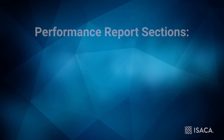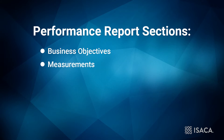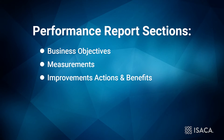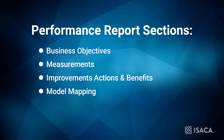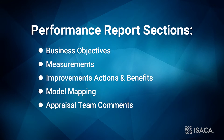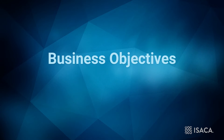The Performance Report has five sections: Business Objectives, Measurements, Improvement Actions and Benefits, Model Mapping, and Appraisal Team Comments. Let's talk about each section in more detail.